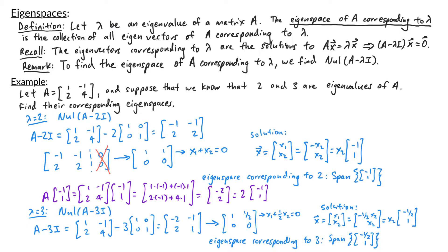If we want to avoid fractions, we can multiply that vector by 2, so the eigenspace is also the span of the vector negative 1, 2. Some examples of eigenvectors corresponding to eigenvalue 3 are negative one-half, 1, or negative 1, 2, or any scalar multiples of those vectors — for example, 3, negative 6, or negative 5, 10 would be others.